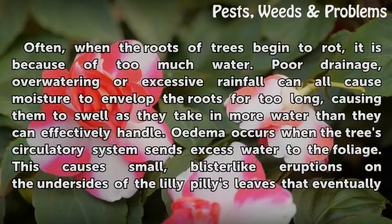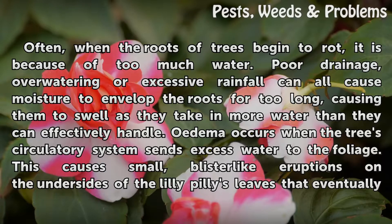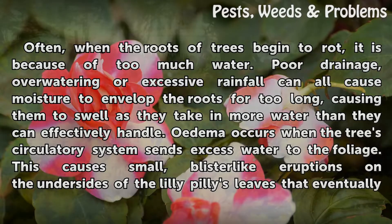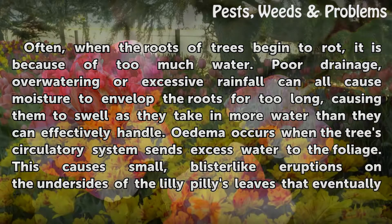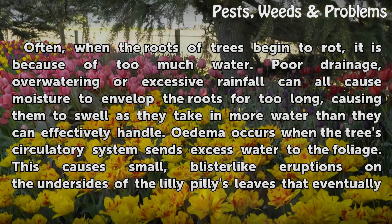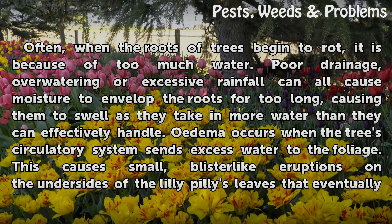Often, when the roots of trees begin to rot, it is because of too much water. Poor drainage, over-watering, or excessive rainfall can all cause moisture to envelop the roots for too long, causing them to swell as they take in more water than they can effectively handle. Edema occurs when the tree's circulatory system sends excess water to the foliage.